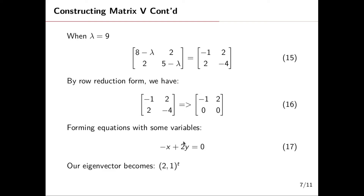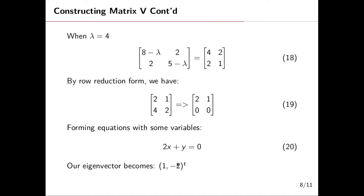With row reduction, row two is a scalar multiple of row one so it goes to zero. We form an equation from this using the null-space principle, giving us equation 17: minus x plus 2y equals zero. From here we can re-express this as minus x equals minus 2y. We have one free variable, so when y equals one, we get x equal to two — our first eigenvector.